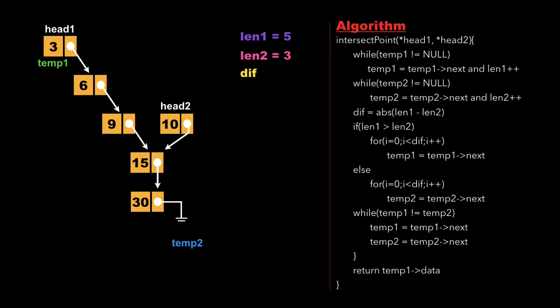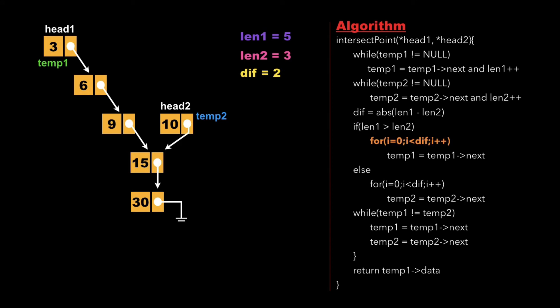We then point temp1 and temp2 back to head1 and head2 respectively, and calculate the absolute difference between length1 and length2, giving a difference value of 2. We then check whether linked list one is greater or linked list two is greater. Since length1 is greater than length2, linked list one was longer, so we move temp1 forward by the difference number of counts.